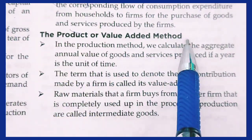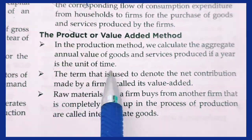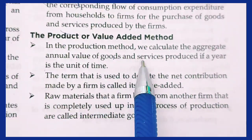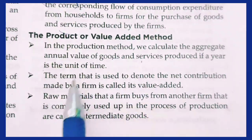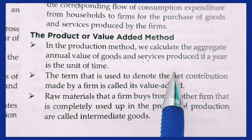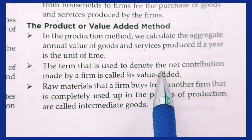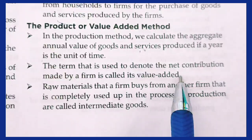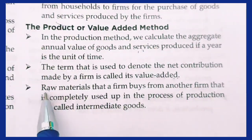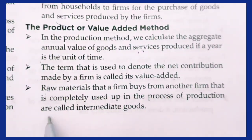The product or value-added method: in this production method, we calculate the aggregate annual value of goods and services produced — using a year as the unit of time. The term used to denote the net contribution made by a firm is called value added. Raw materials that a firm buys from another firm and completely uses up in the production process are called intermediate goods.